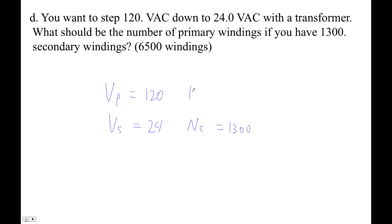So therefore, the number of primaries is something, right? These guys are of course directly proportional. So 120 over 24 equals NP over 1300.